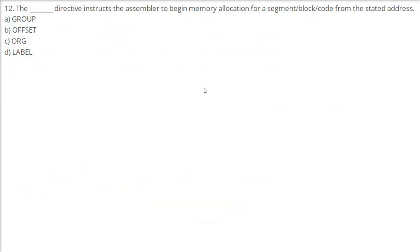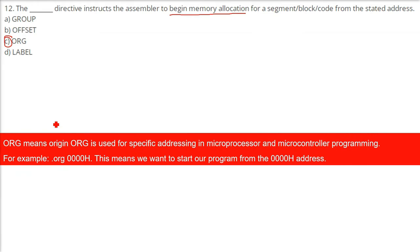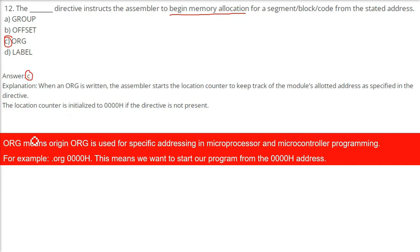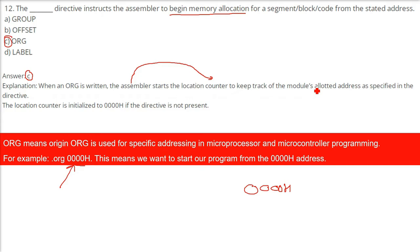The ORG directive instructs the assembler to begin memory allocation for a segment block of code from the stated address. ORG stands for 'origin' and is used for specific addressing in microprocessor and microcontroller programming. For example, if ORG 0000H is written, it means we want to start our program from address 0000H, and the assembler starts the location counter to keep track of addresses allocated.